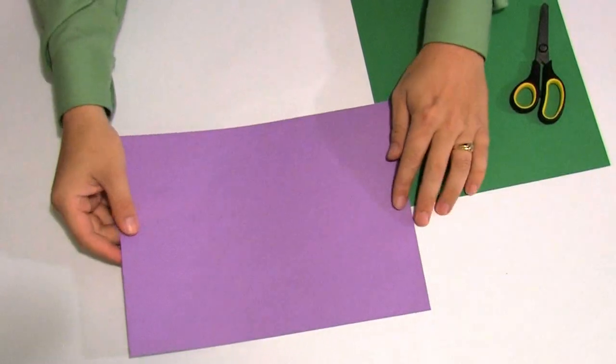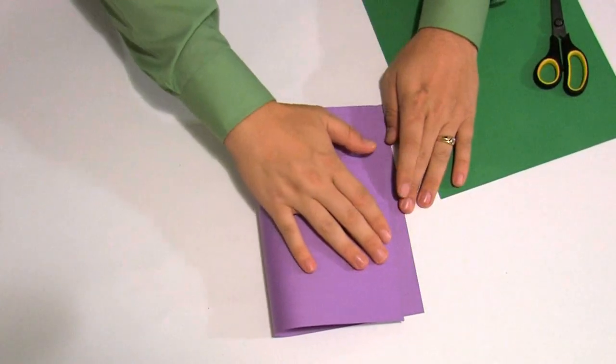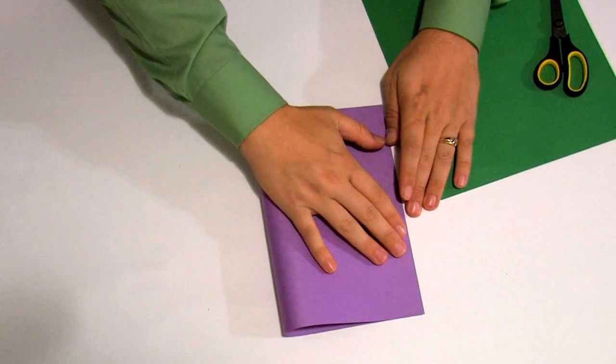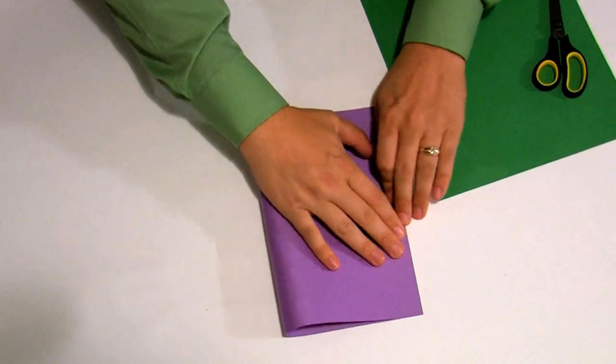We're going to take one of the sheets of paper and we are going to fold it in half. So we go from a whole to two halves.